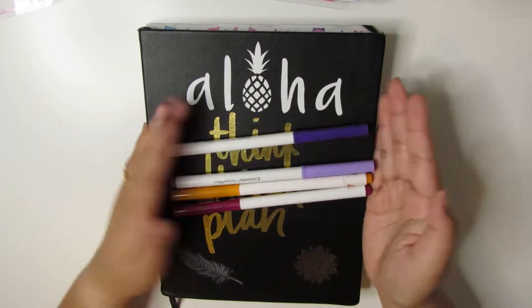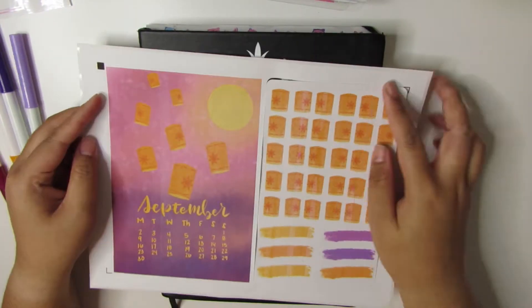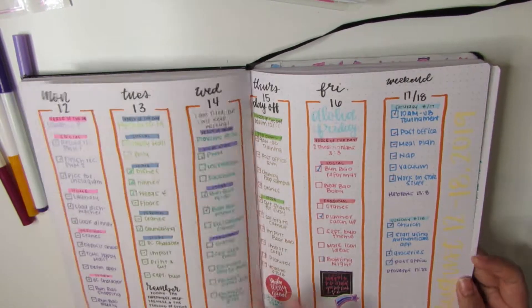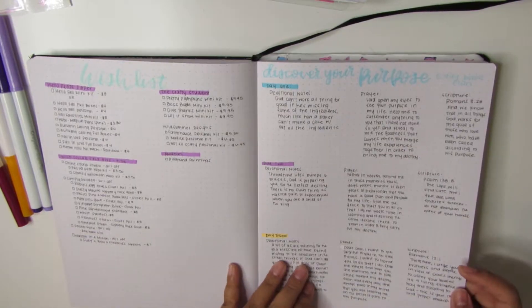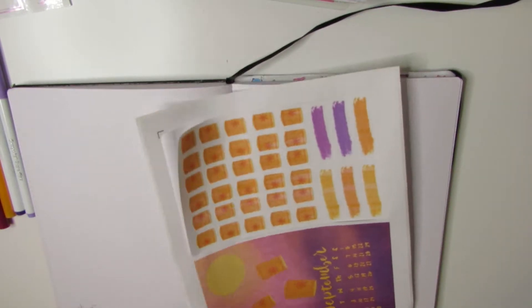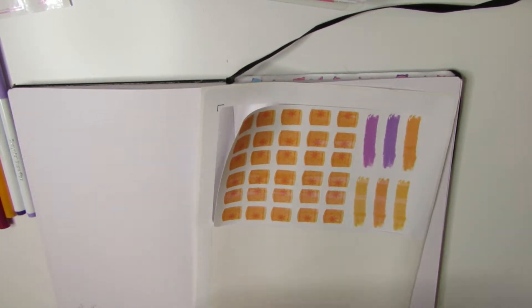Hey guys, welcome back to the channel. Today I am setting up my September bullet journal spread. I already sketched it out with pencil and this is how my spreads have been looking lately - very minimalistic and very colorful at the same time.